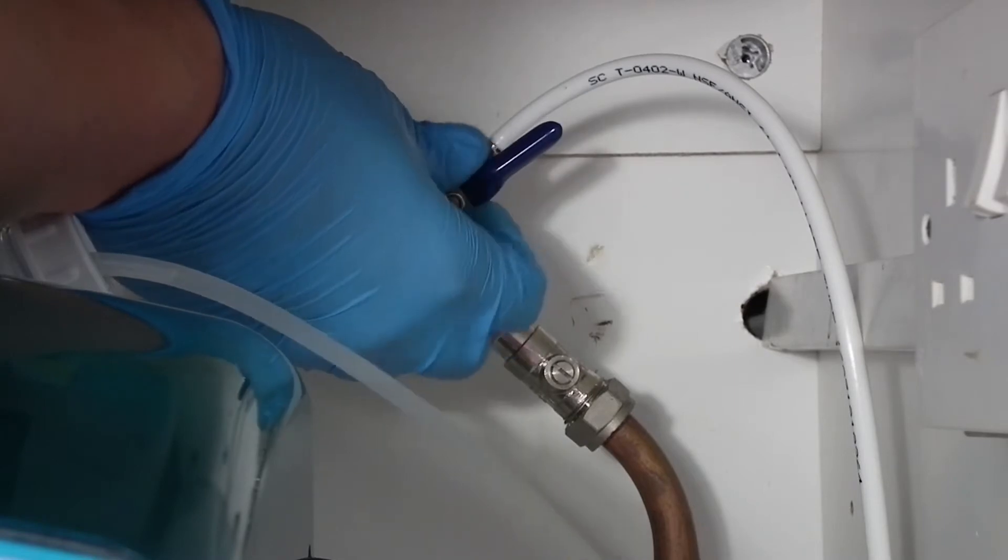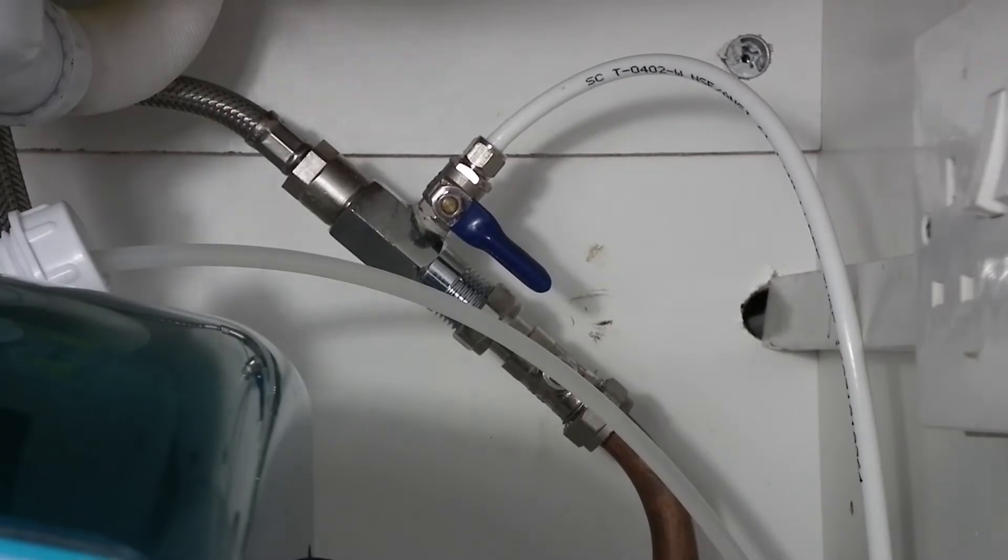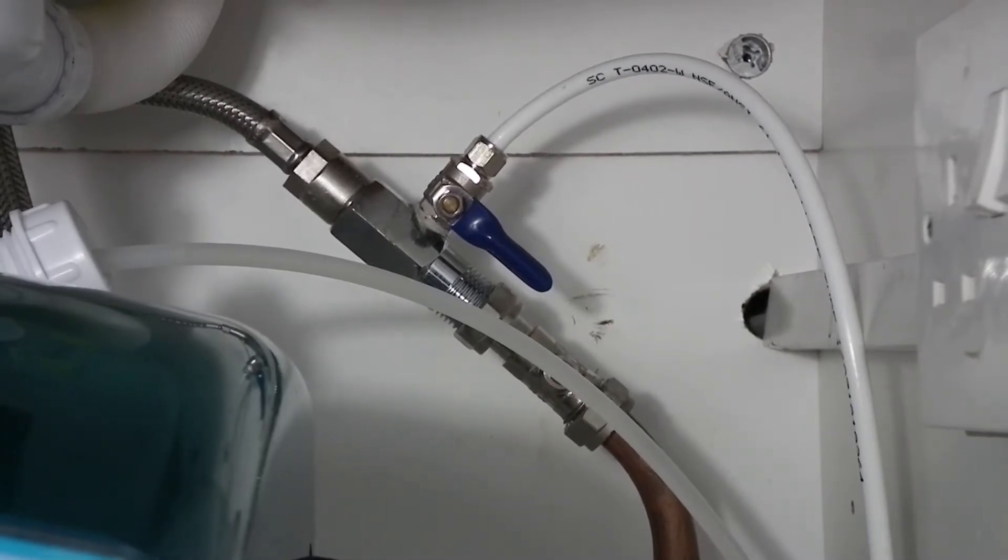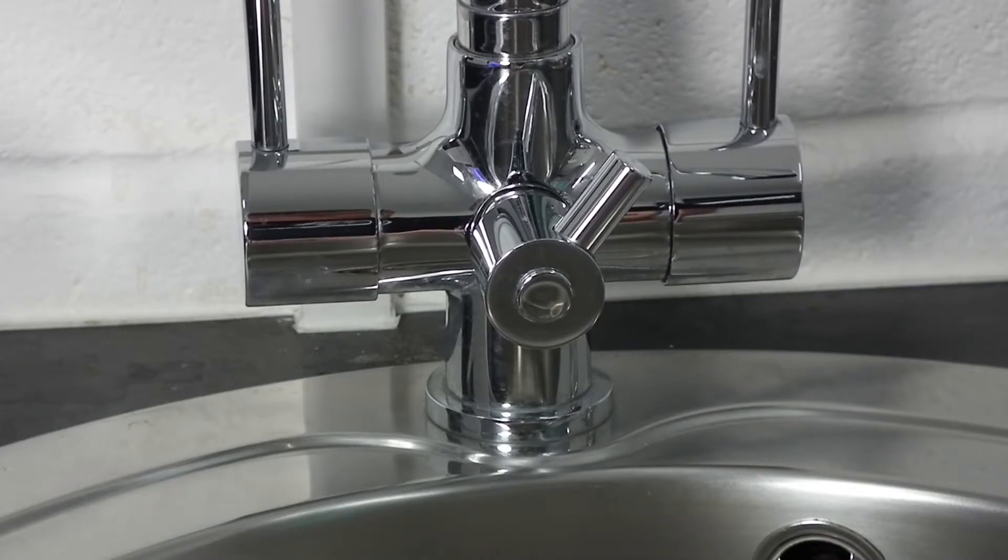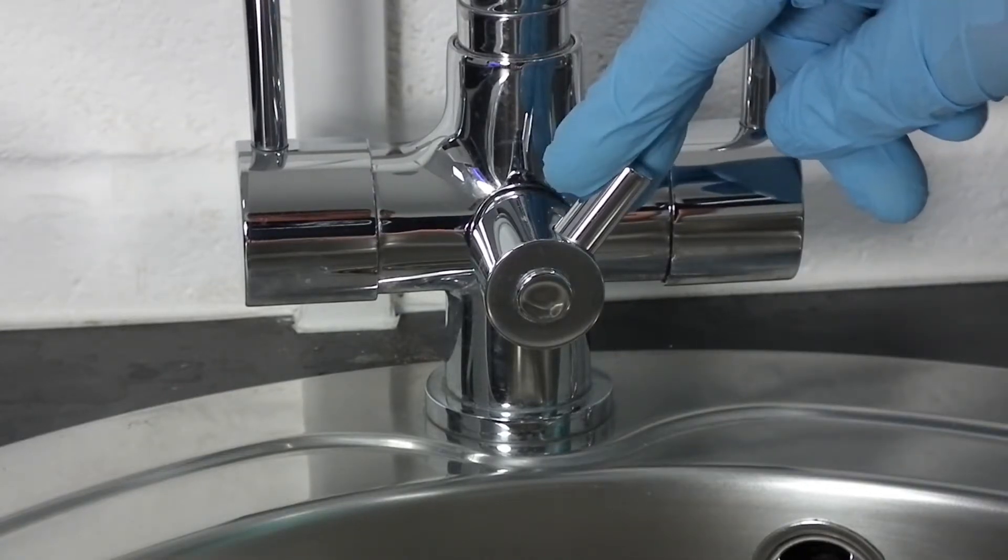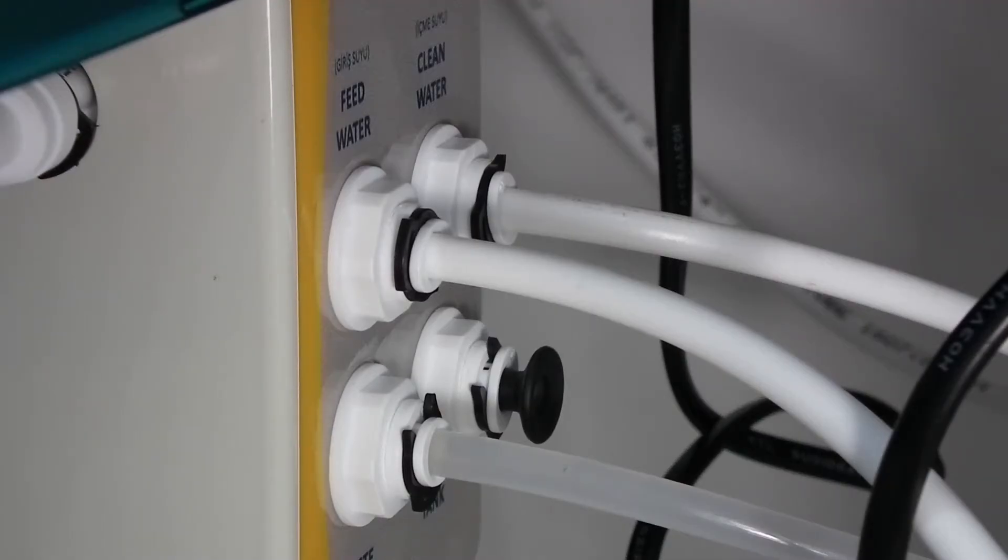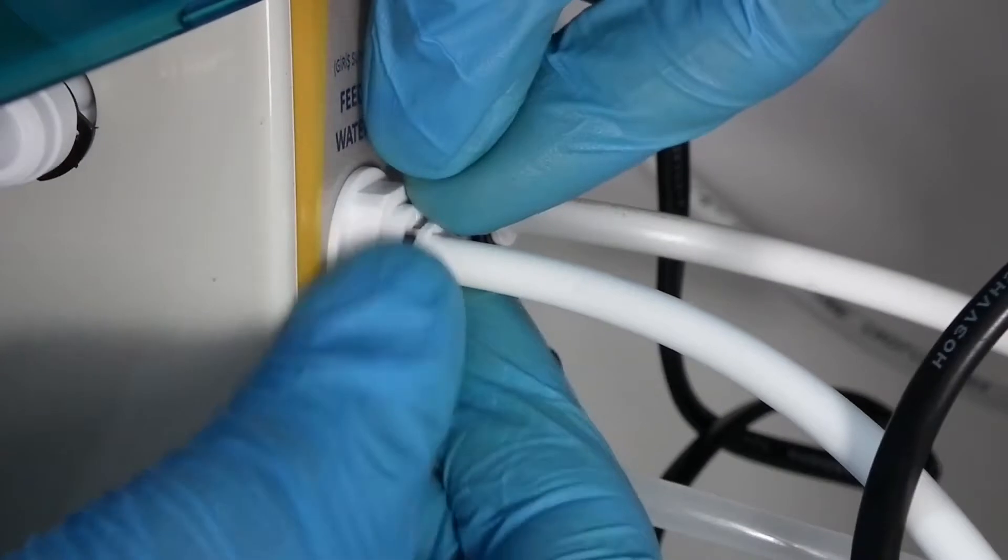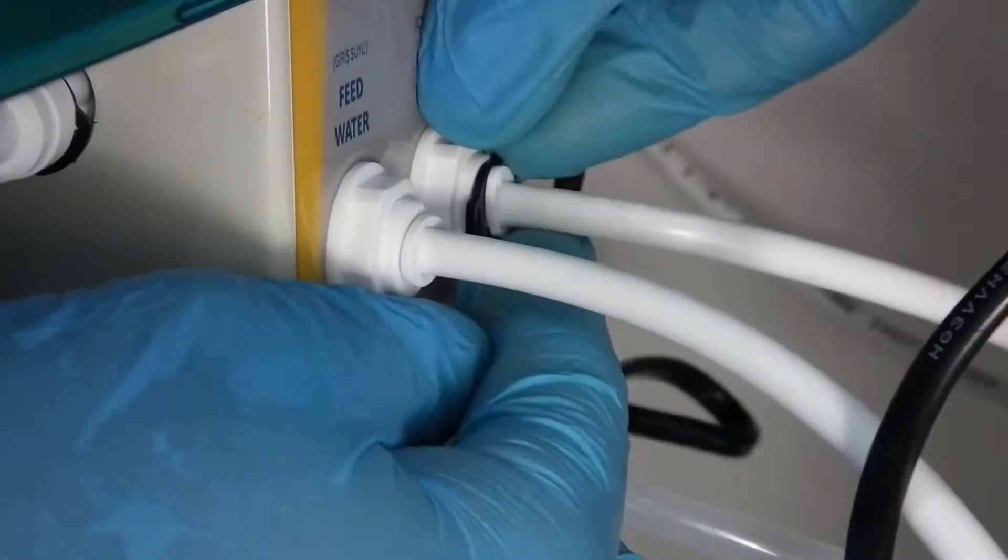If there is a need to remove the filter system from the cupboard, for example when replacing the filters, first close the ball valve to shut off the feed water. Second, open up the tap to let out the excess pressure. And third, remove all the tubing to be able to pull out the system from the cupboard.